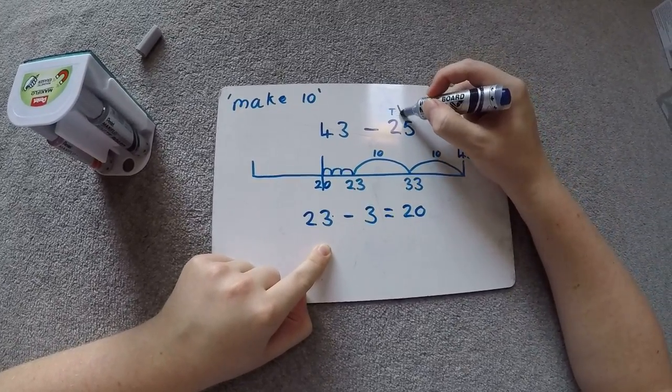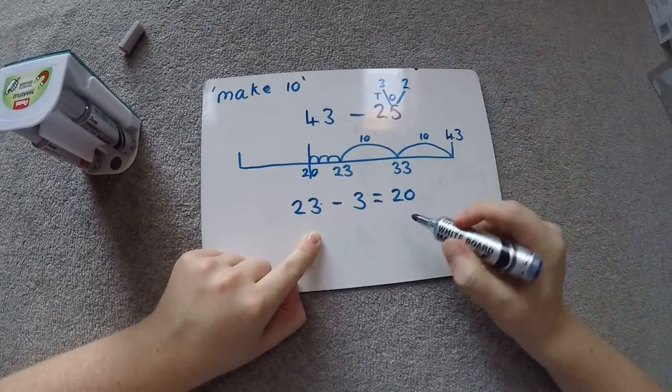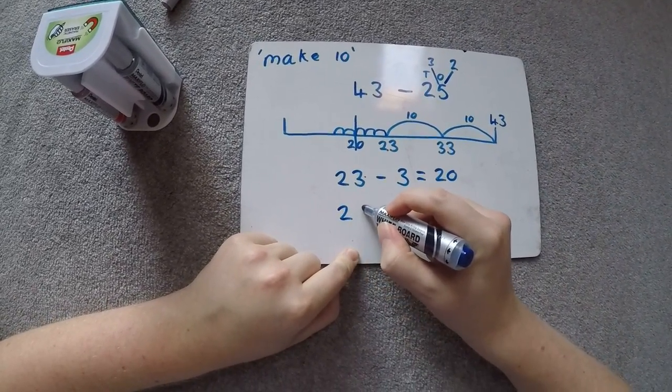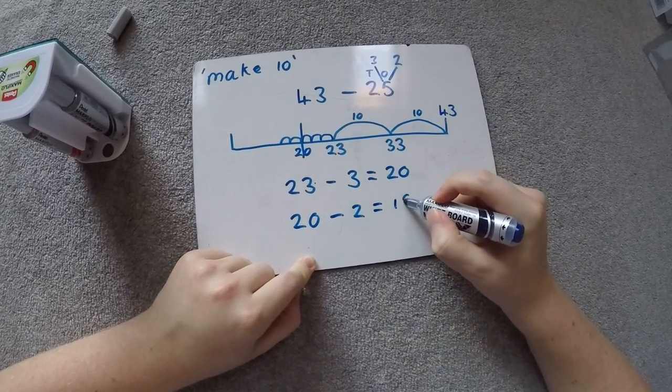Now, from our 5, if we've used 3, our remaining number is going to be 2. So we can just do our last two jumps. 20 take away 2 equals 18.